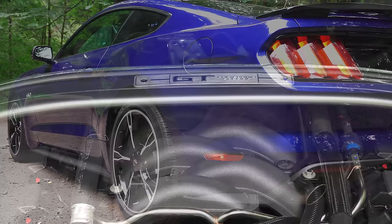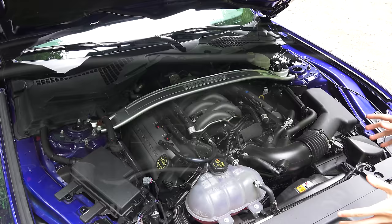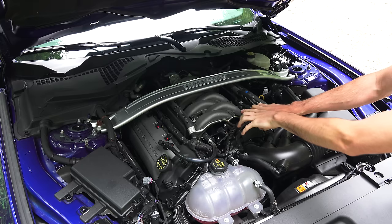On the Mustang, one of the pieces of technology working towards this goal is the charge motion control valve. Now like any other gasoline engine, the air enters through the air filter, passes along through the throttle body, enters the intake manifold where it's then split between the eight cylinders, and then it runs into the charge motion control valve.